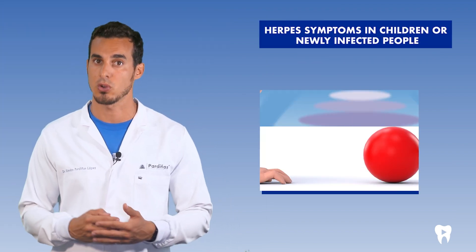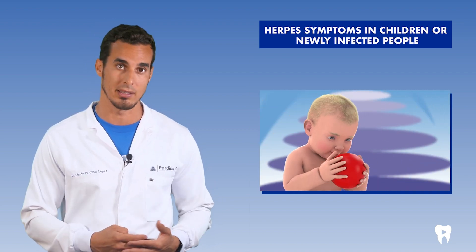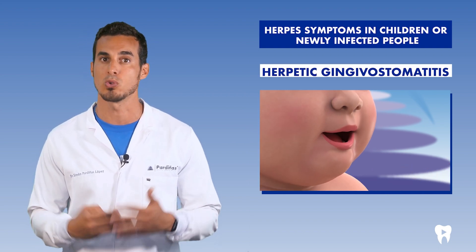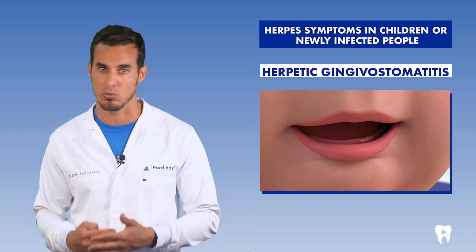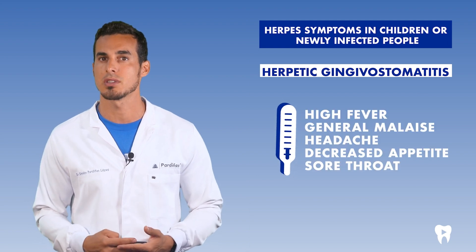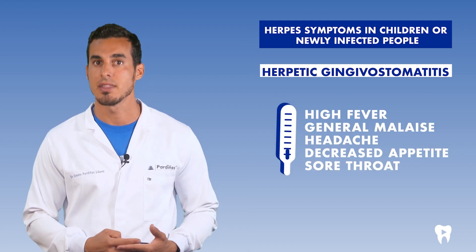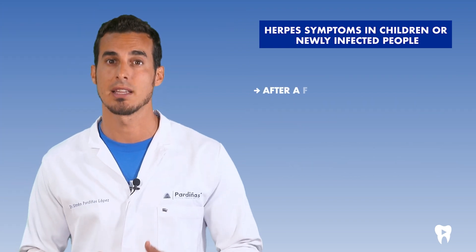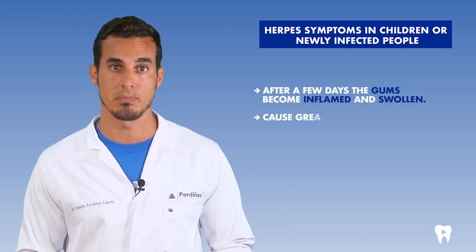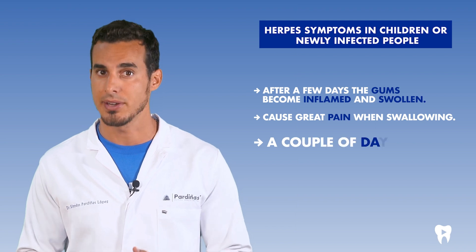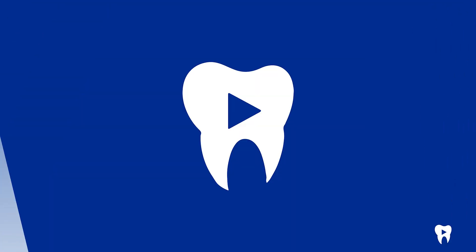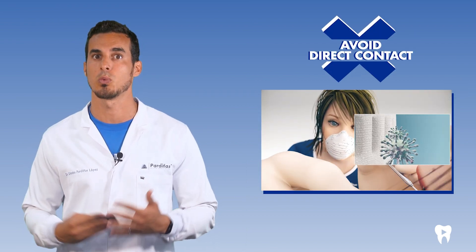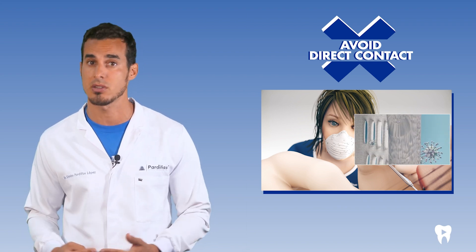In children, the first contact and infection with the herpes virus is usually asymptomatic, although it's also possible that it causes herpetic gingivostomatitis, which is the most common cause of stomatitis in children aged 1 to 3 years. This condition usually causes high fever, general malaise, headache, decreased appetite, and a sore throat, so it can be confused with pharyngitis. After a few days, the gums become inflamed and swollen, causing great pain when swallowing. A couple of days later, multiple blisters appear anywhere in the mouth. Being a virus transmitted by contact, it's important to avoid direct contact with infected people when there are clinical manifestations of blisters and vesicles.